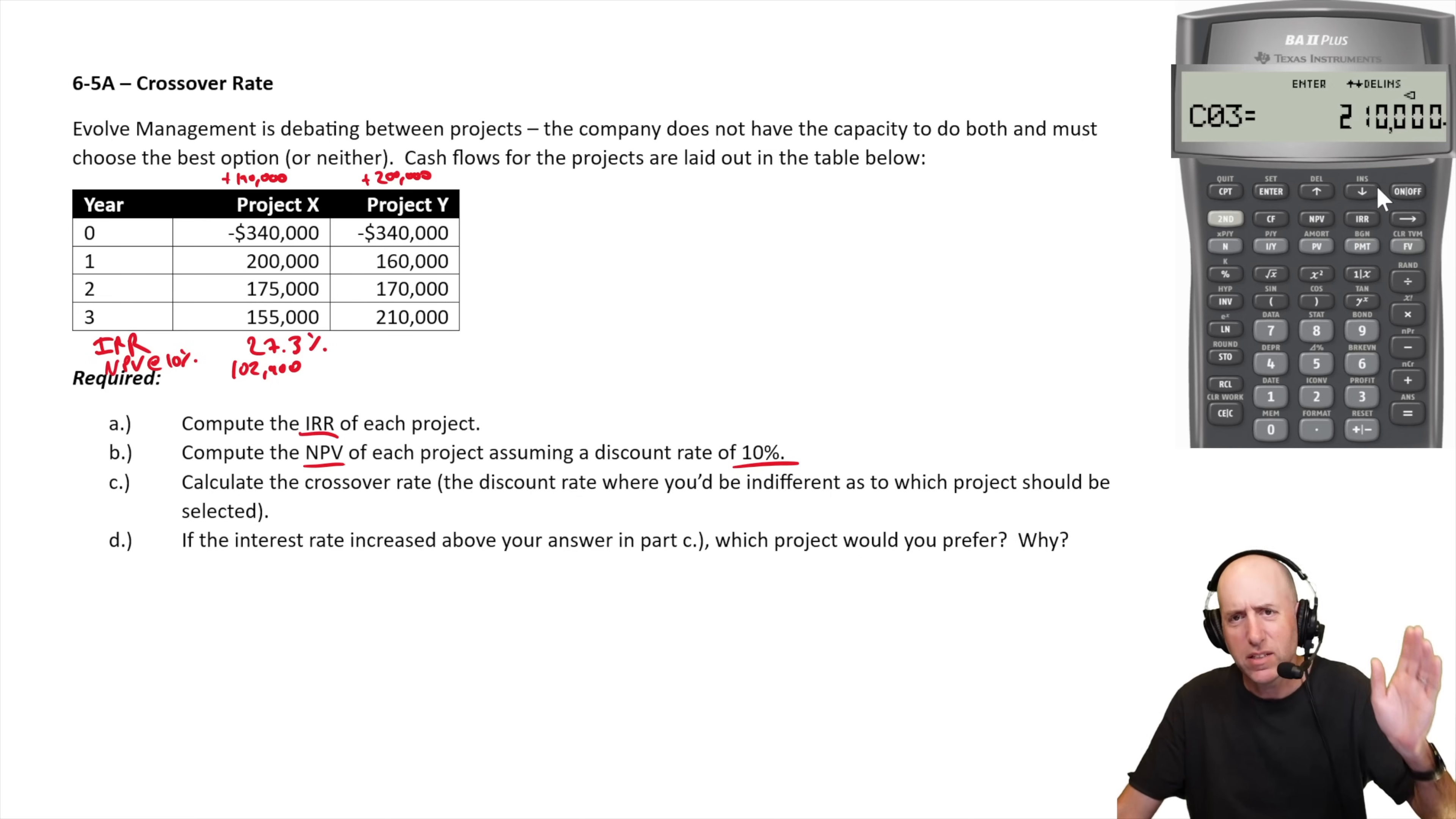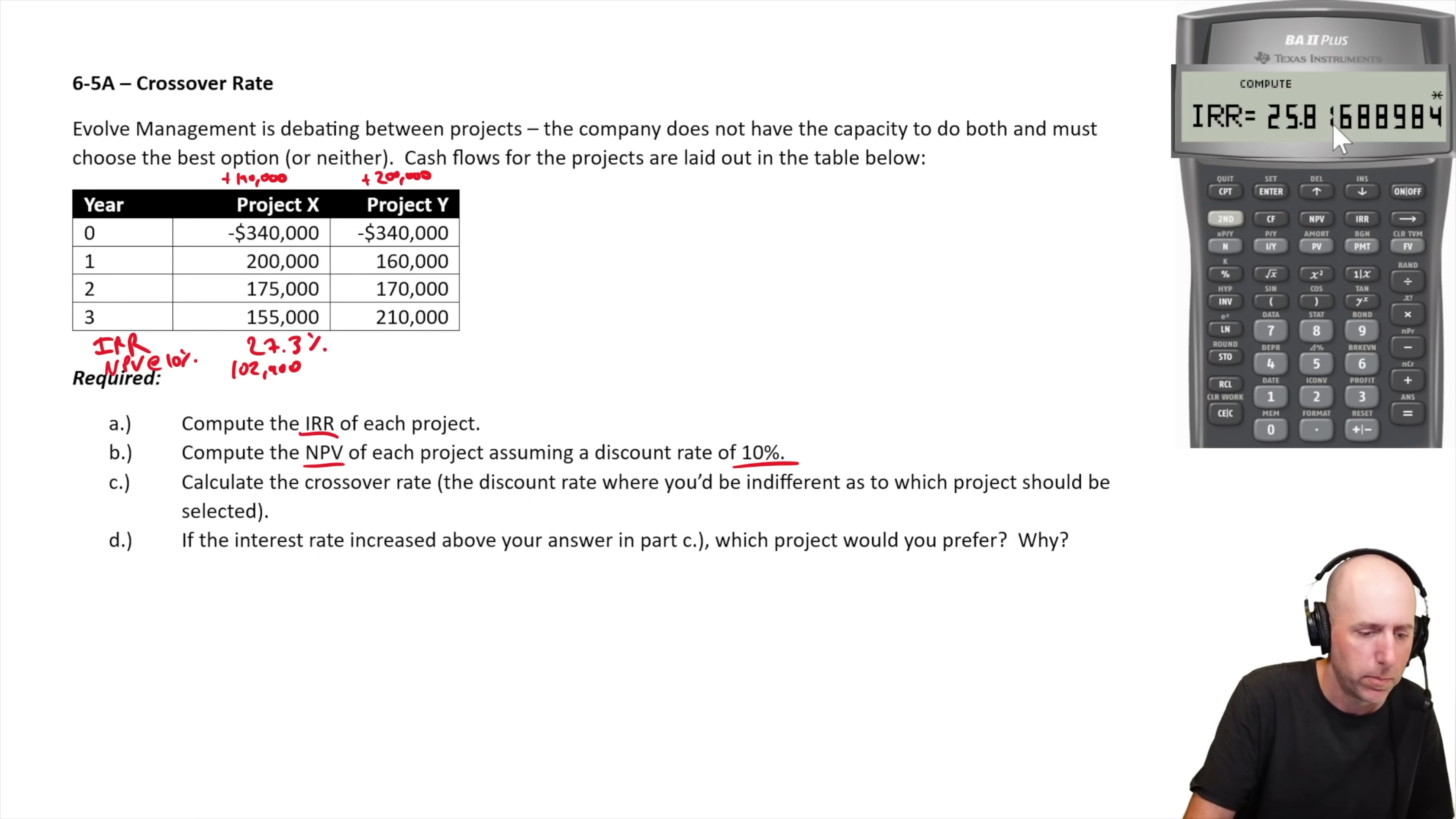Now, I just had this sneaking suspicion. Did I put in my cash flow at time 0 as a negative number? I did. So you can just hit up and down and go through your cash flows. But they're there. So I've got everything in. Now I want to compute IRR. So I just hit IRR. Compute. 25.82%. I guess I'll just call it 25.8%. So a lower IRR for project Y. Slightly.